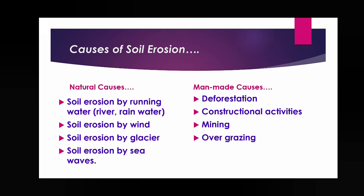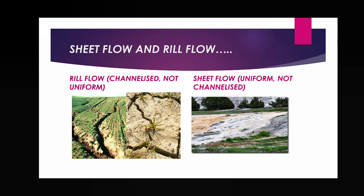Today we will discuss soil erosion by water. Before going into the types of water-based erosion, we should know two types of rainwater flow: one is called sheet flow, another is called rill flow. Also, we should recall that there are three types of land slope — steep slope (mountainous region), moderate slope (plateau region), and gentle slope (plain region).